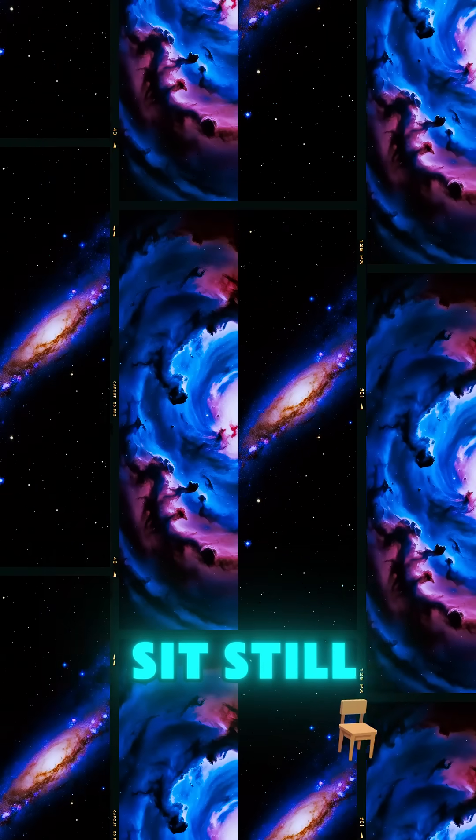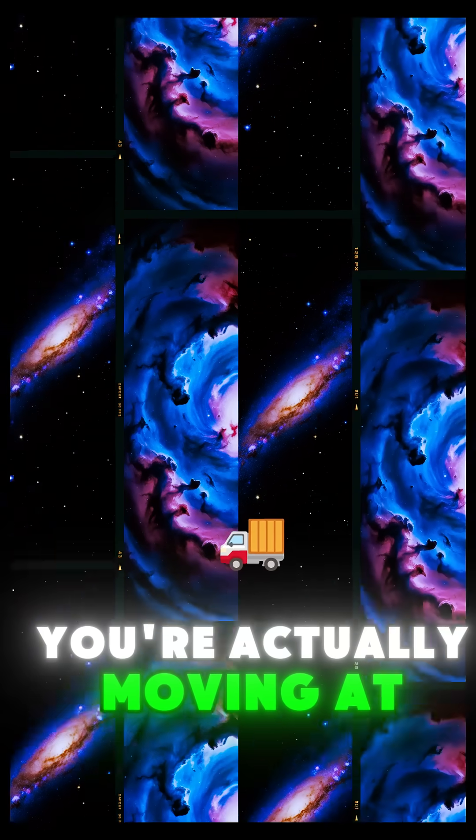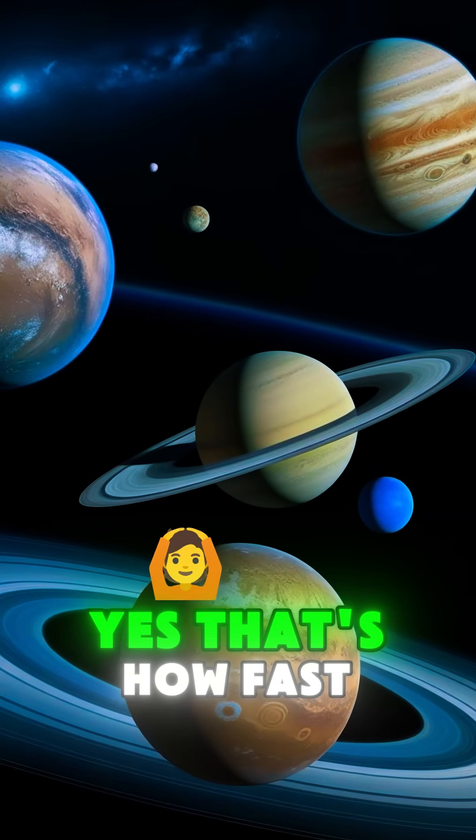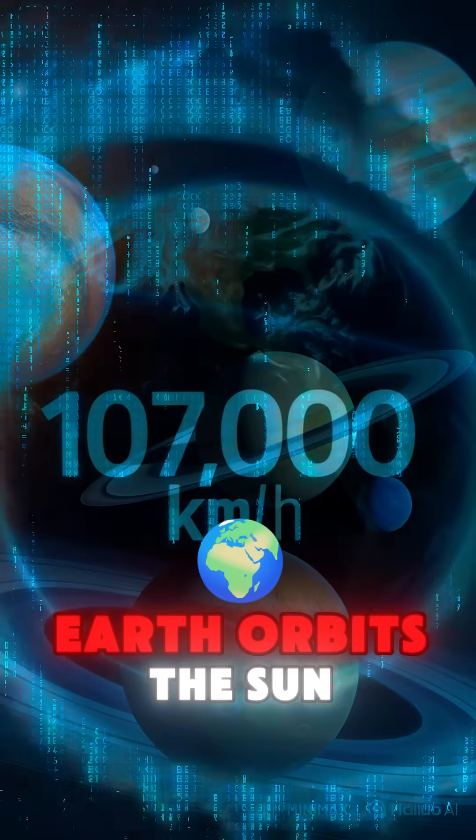Did you know that right now, as you sit still, you're actually moving at 107,000 kilometers per hour? Yes, that's how fast Earth orbits the sun.